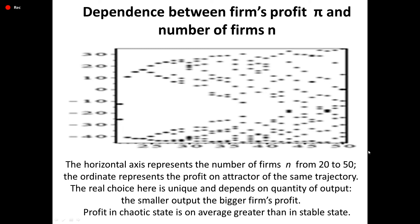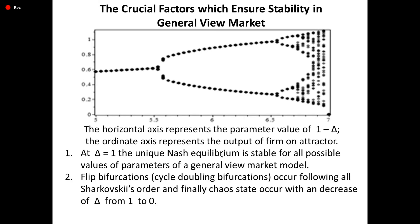Dependence between firm profit Pi and number of firms n, shown on the following graph: the horizontal axis represents the number of firms n from 20 to 50, and the ordinate represents the profit on the attractor of the same trajectory. The real choice here is unique and depends on quantity of output. The smaller the output, the bigger the firm's profit. Profit in the chaotic state is on average greater than in the stable state.